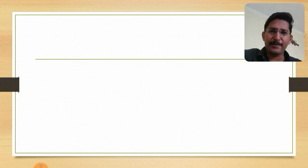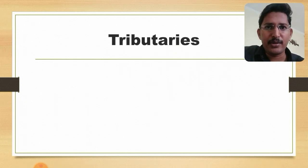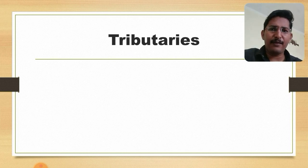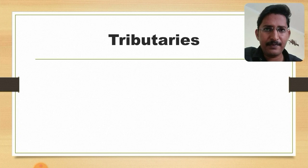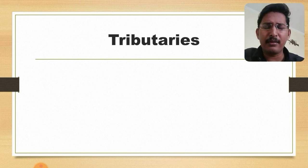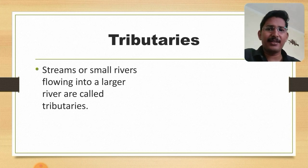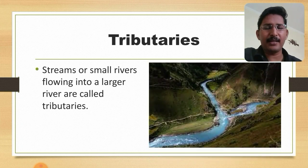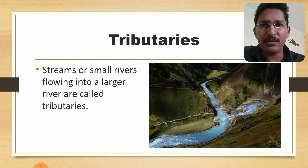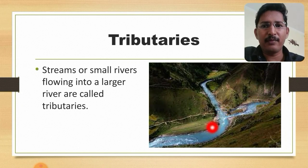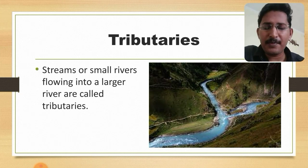Our next geographical feature is tributary. So where do these rivers come from? It has got an origin. Many small streams join together to form a big river. Streams or small rivers flowing into a larger river are called tributaries. Here is an example: two streams come together to form a larger river. This is what tributaries are.